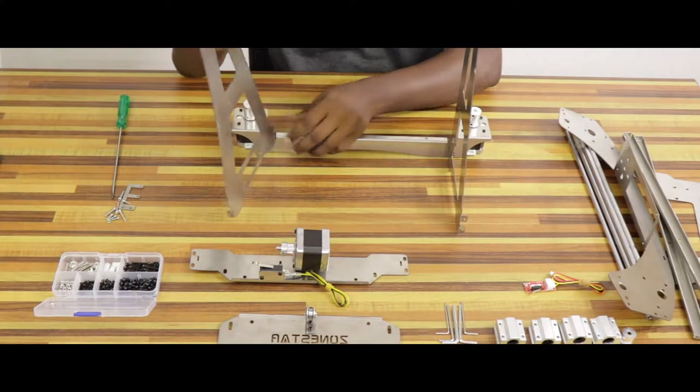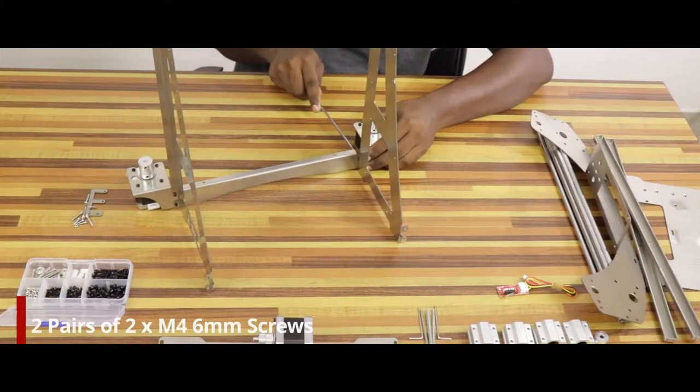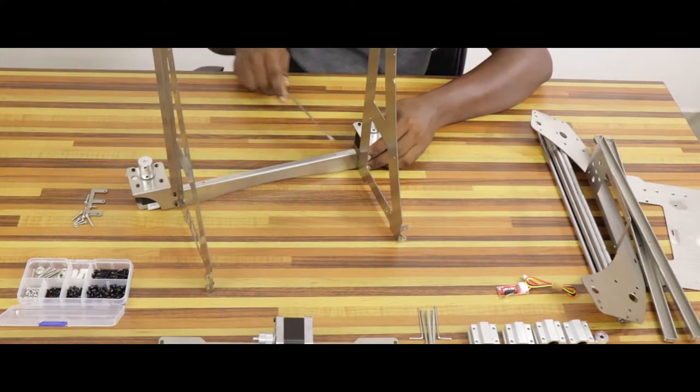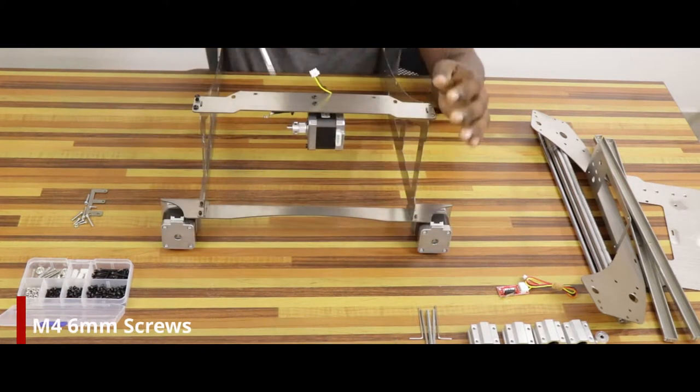Now, attach the left and right base frame support with the bottom base frame using four M4 6mm screws. Let's attach the rear base frame to this support using four M4 6mm screws.